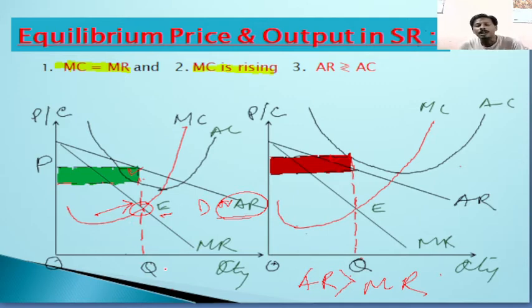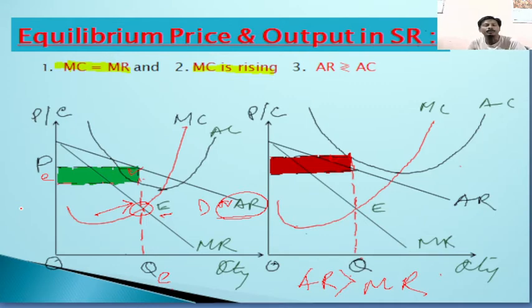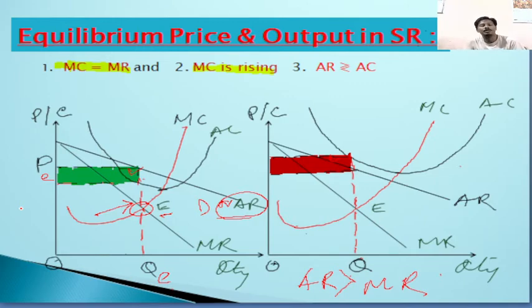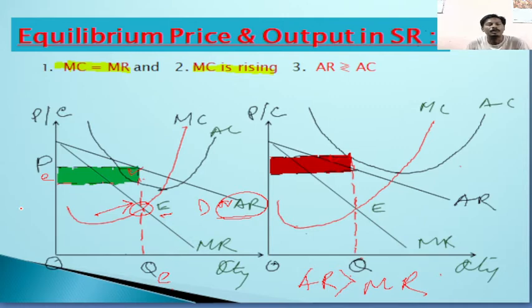At the equilibrium point, we determine the equilibrium output and equilibrium price. After determining the equilibrium level, the question is whether the firm is earning profit or incurring losses. To estimate profit or loss, we compare average receipts and average costs. We have already drawn the average revenue curve; now we draw the average cost curve to compare revenue and cost at equilibrium.